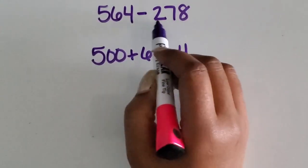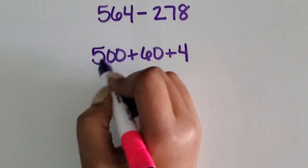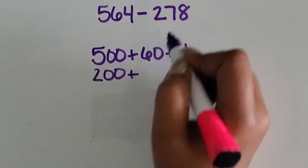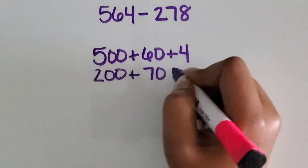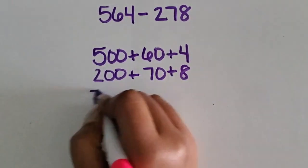Our second number, 278. The two is in the hundreds place, so the value is 200. The seven is in the tens place, so the value is 70. The eight is in the ones place, so the value is 8.